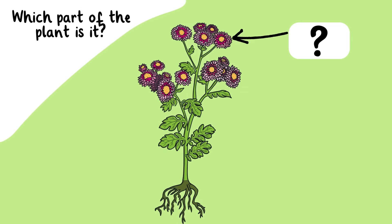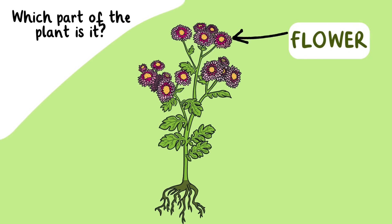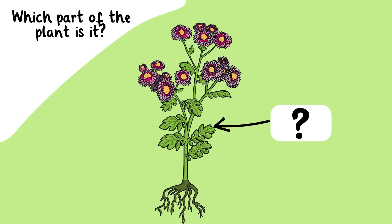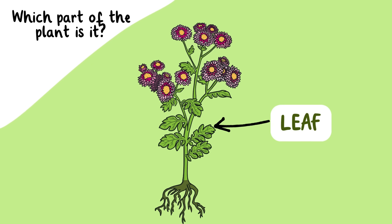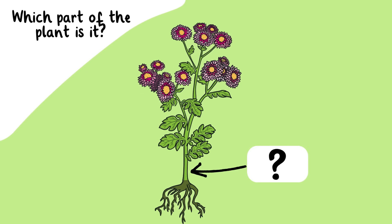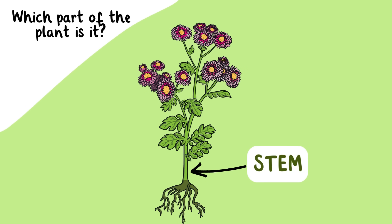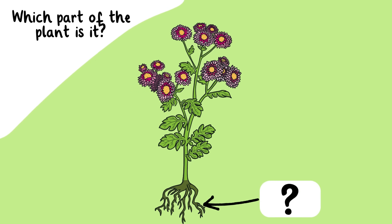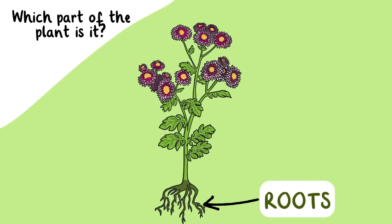Which part of the plant is it? It's the flower — nice job! Which part of the plant is this? It's the leaf — great thinking! What about this part? It's the stem. Lastly, what part of the plant is this? The roots — awesome work!